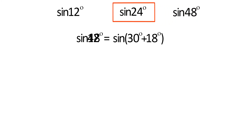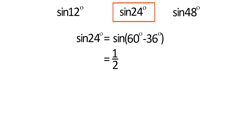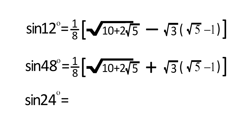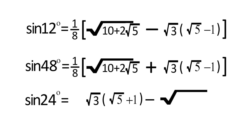Now we are going to find the value of sin 24 degrees. Sin 24 degrees equals sin(60 degrees minus 36 degrees), which equals (1/2)(√3 times cos 36 degrees minus sin 36 degrees). After putting in the values of sin 36 degrees and cos 36 degrees, we get sin 24 degrees equals (√3 times (√5 + 1) minus √(10 minus 2√5)) divided by 8.